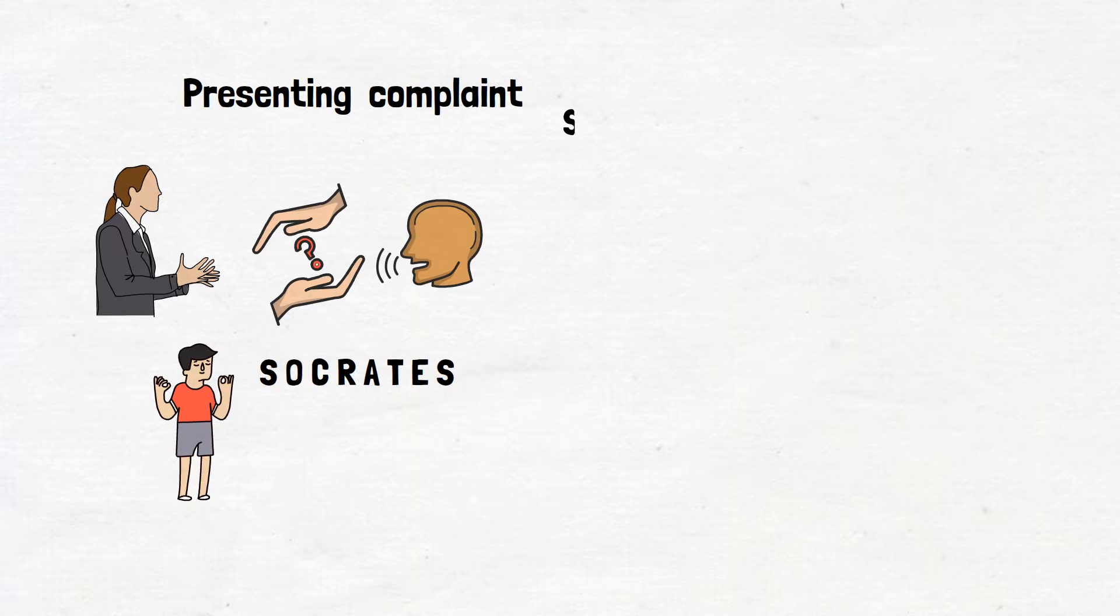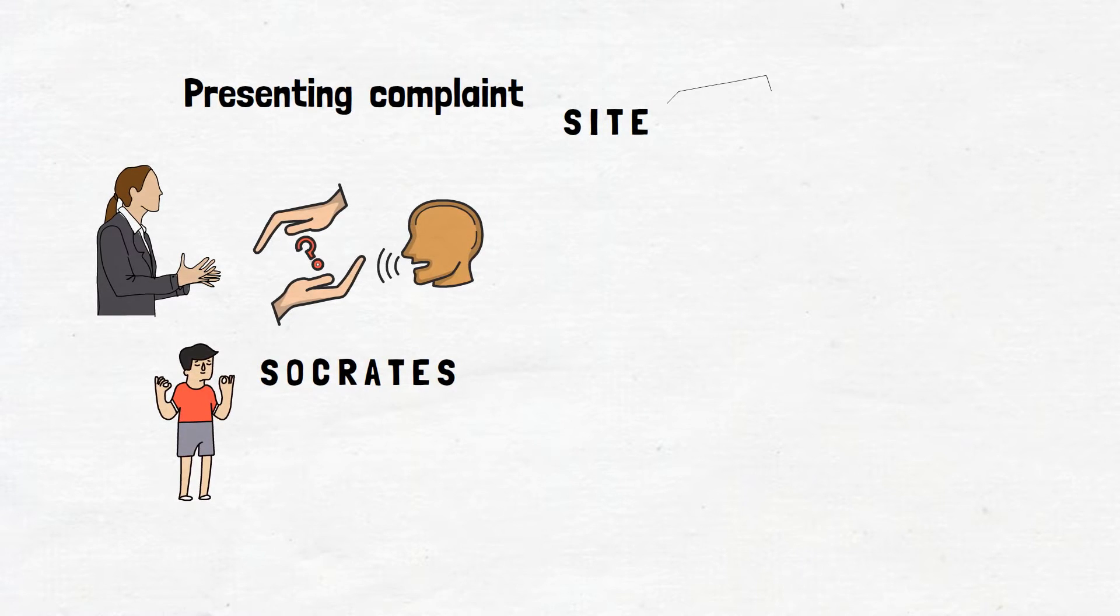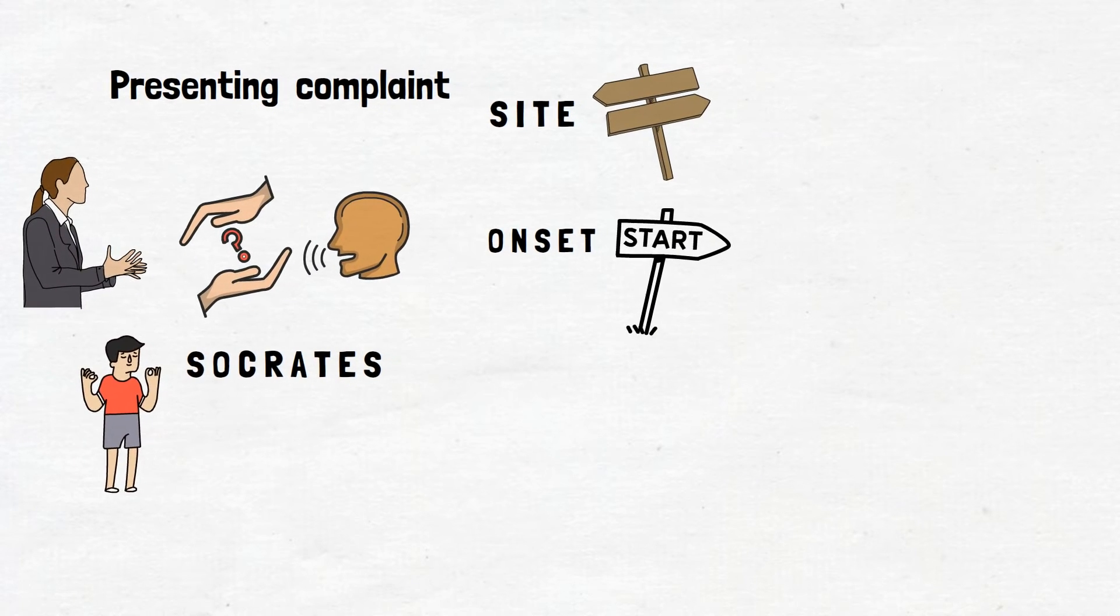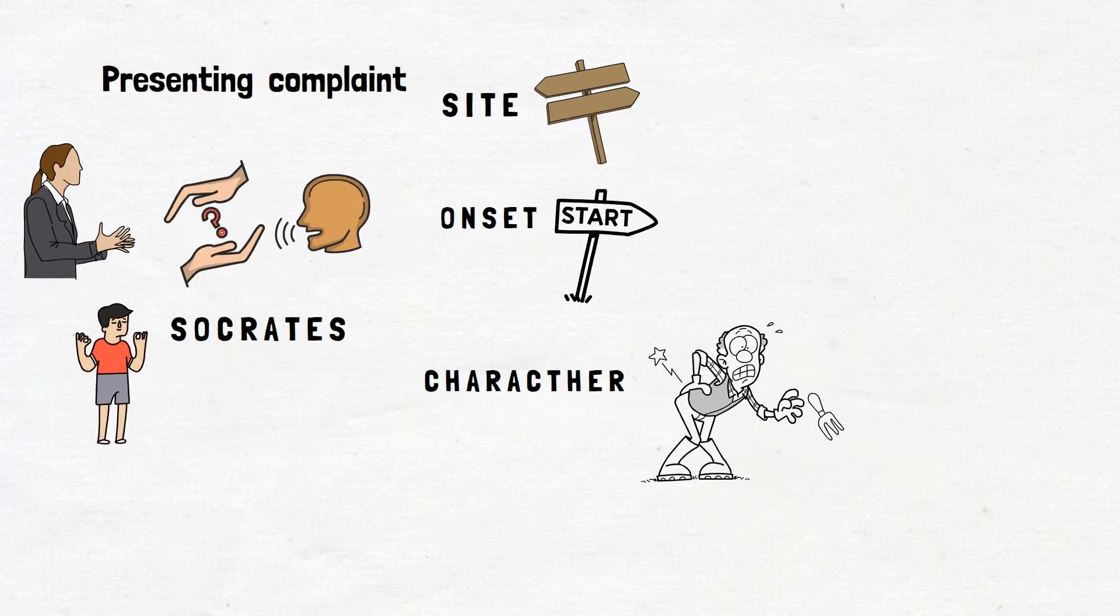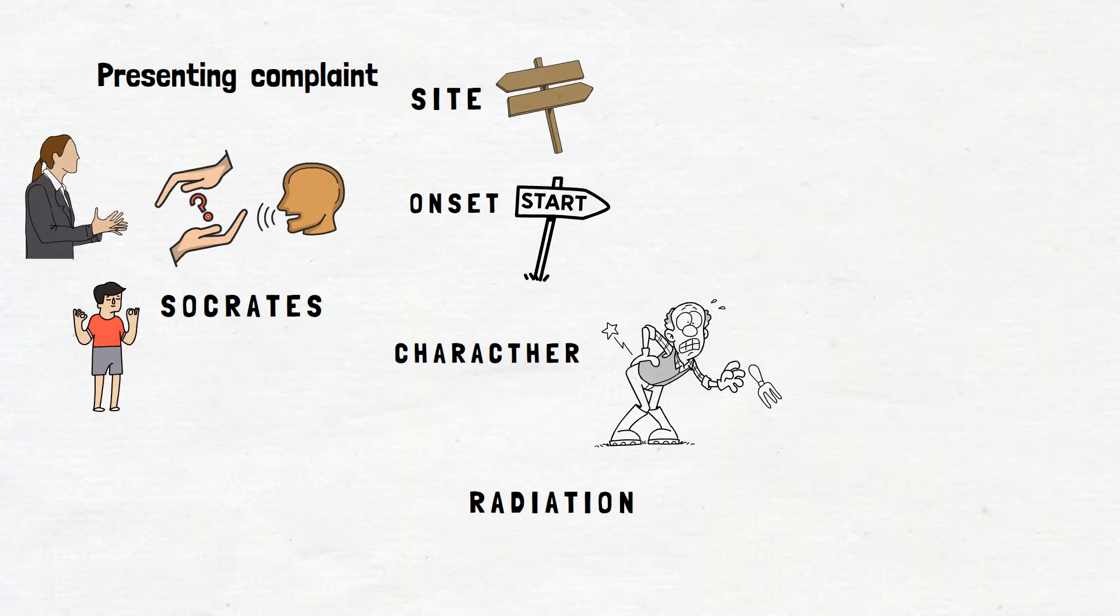The most obvious question will be to ask them the site. Where is the rash? O for onset. How long has the rash or the lesion been present? C for character. How does the rash feel like? R for radiation. Is it spreading?